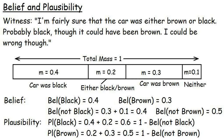Here's a statement from a witness to a hit-and-run accident who saw the car speeding away from the scene: 'I'm fairly sure that the car was either brown or black, probably black, though it could have been brown. I could be wrong, though.' Well, we know for sure that one of the following is true: the car was definitely black, the car was definitely brown, the car was either brown or black, or the car was neither brown nor black. Based on that witness's rather vague statement, I've taken the interval 0 to 1, representing all of these possibilities lumped together, and divided it up amongst them.